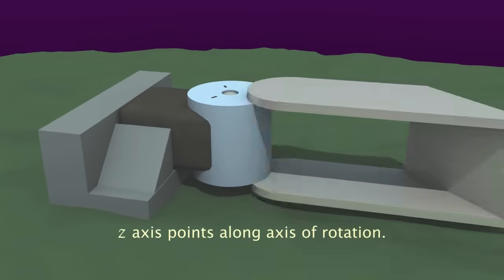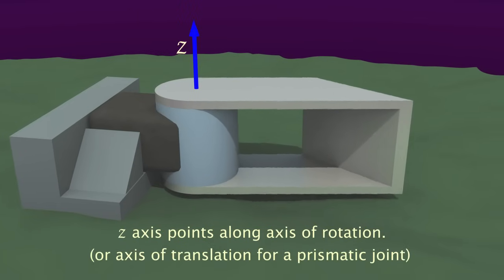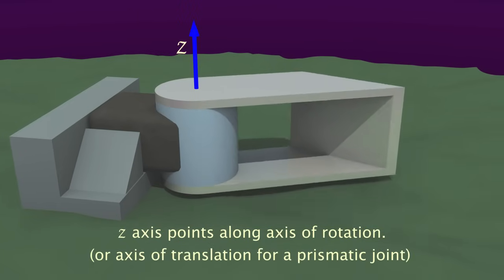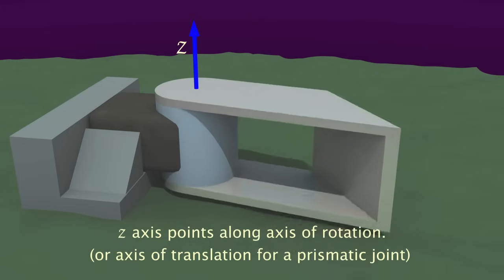The process begins by defining the z-axis along the axis of rotation for revolute joints, or the axis of translation for prismatic joints.